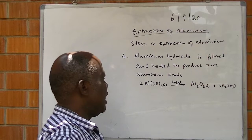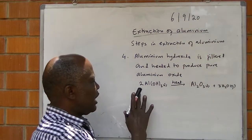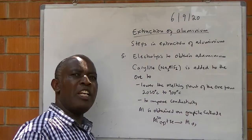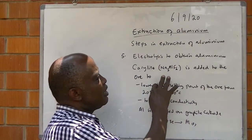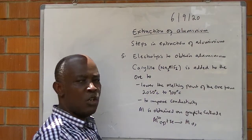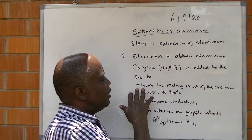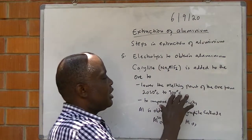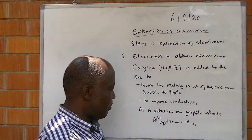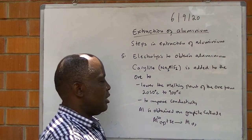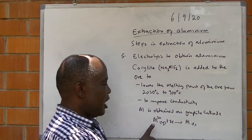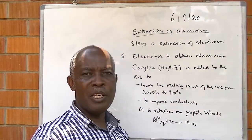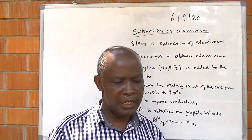Aluminium Hydroxide is filtered and heated to produce pure Aluminium Oxide. Then electrolysis is used to obtain Aluminium. Cryolite, which is sodium Aluminium Fluoride, is added to the ore in order to reduce the melting point from 2500 to 900 degrees, which saves fuel and improves the conductivity of the ore. Aluminium is then obtained at the graphite cathode: Aluminium ions plus 3 electrons give Aluminium metal. This yields pure Aluminium from bauxite.